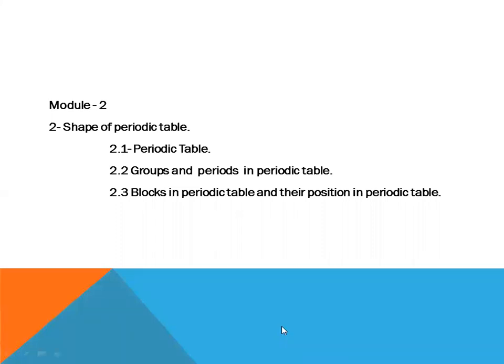Module number two. In this module we will discuss the shape of the periodic table. To understand the shape of the periodic table, we will discuss: number one, the periodic table; number two, groups and periods; and number three, blocks in the periodic table and their positions.